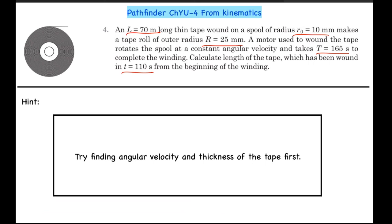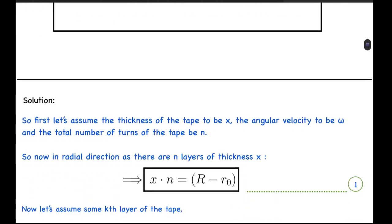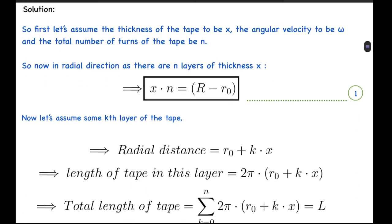If you want to try it again with the hint, you can do it now. Now let's look at the solution. First of all, let's assume the thickness of the tape to be x, the angular velocity to be omega, and the total number of turns of the tape to be n.